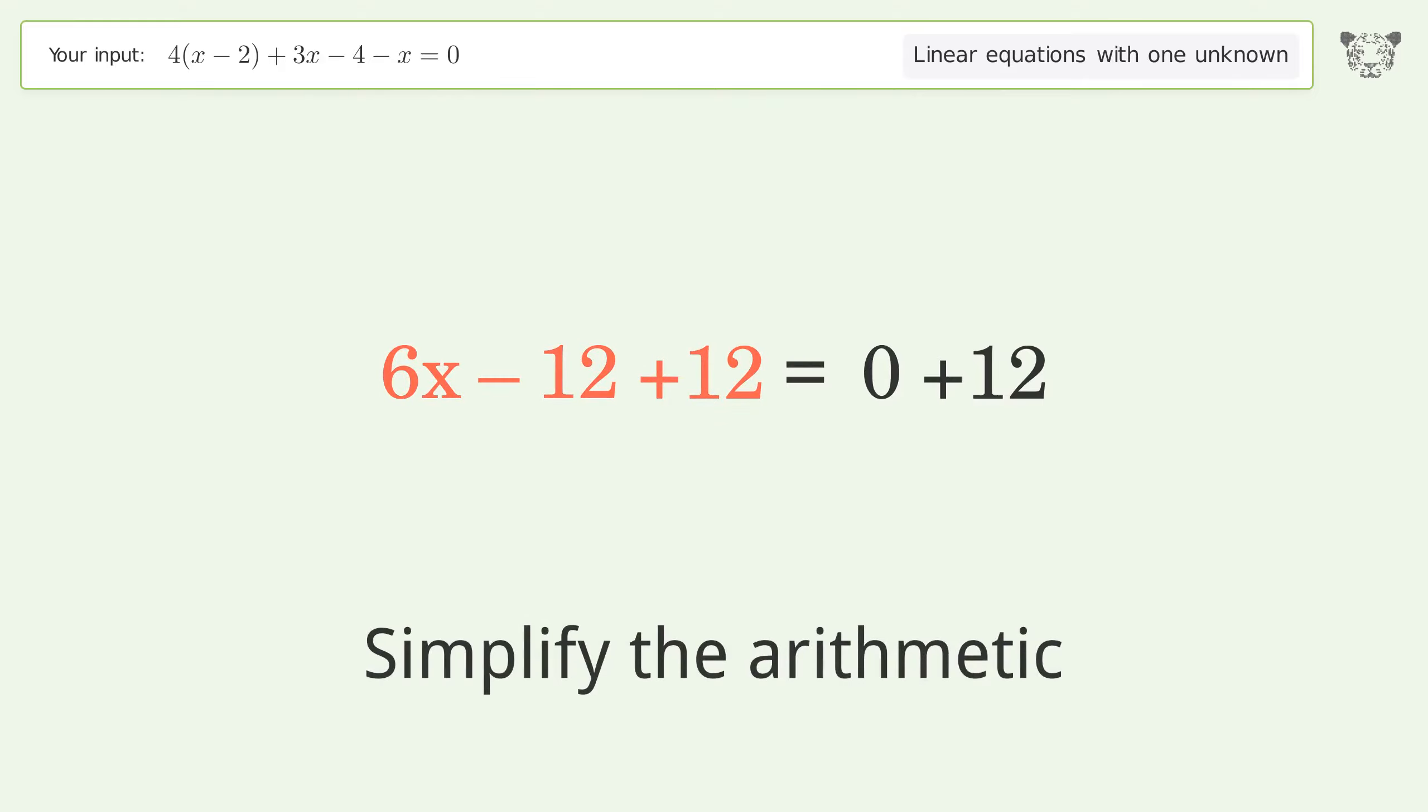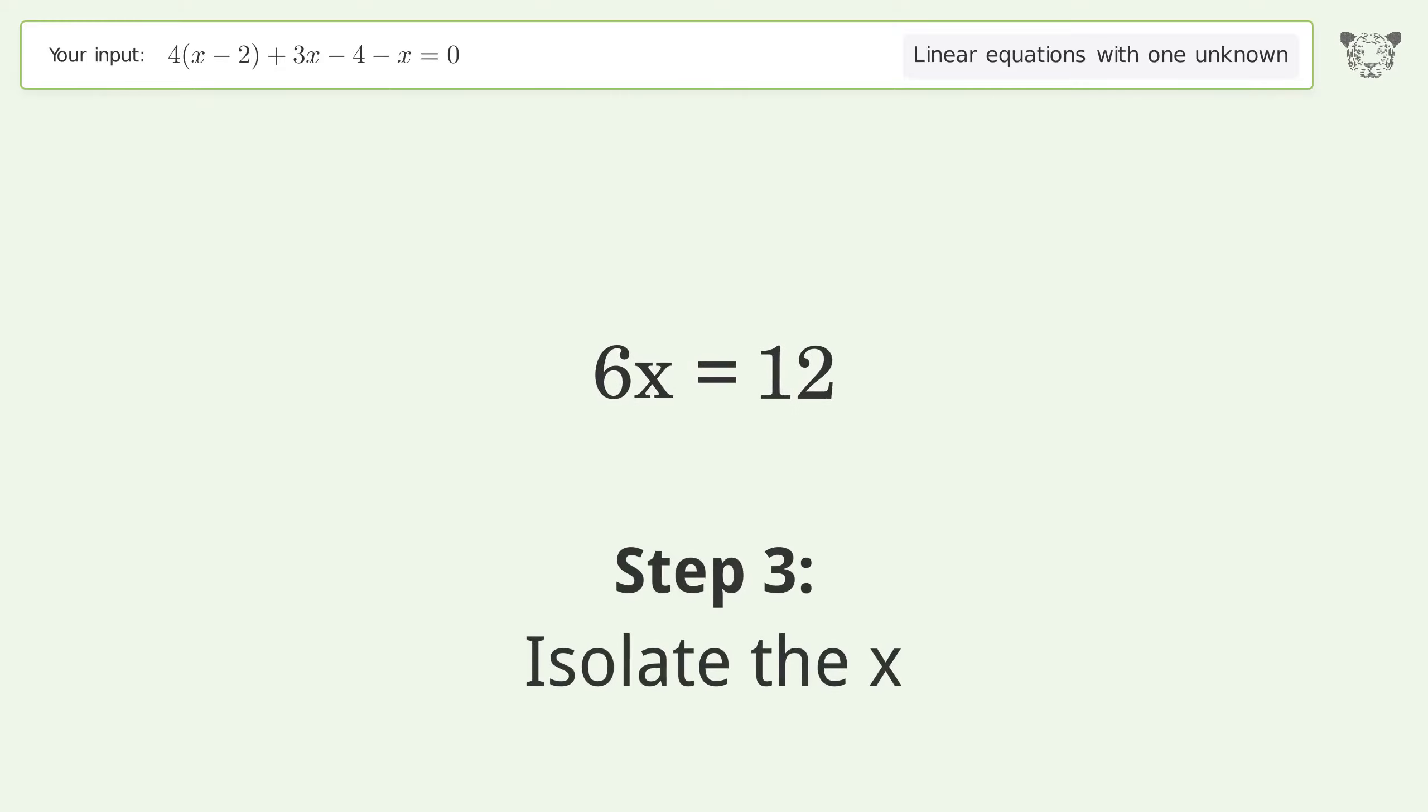Simplify the arithmetic. Isolate the x: divide both sides by 6.